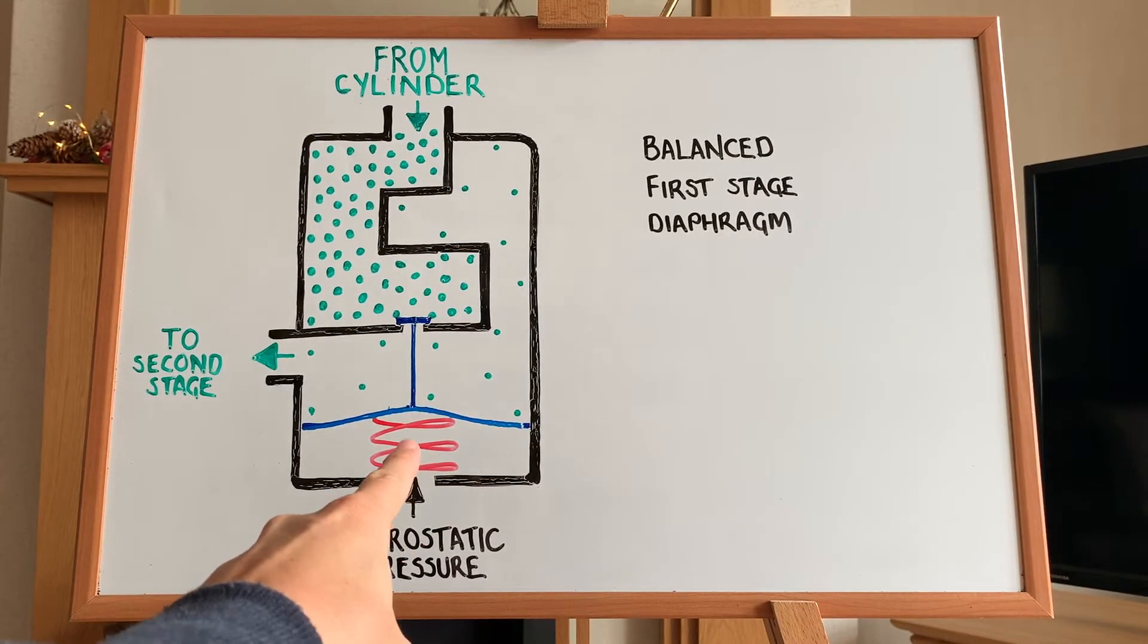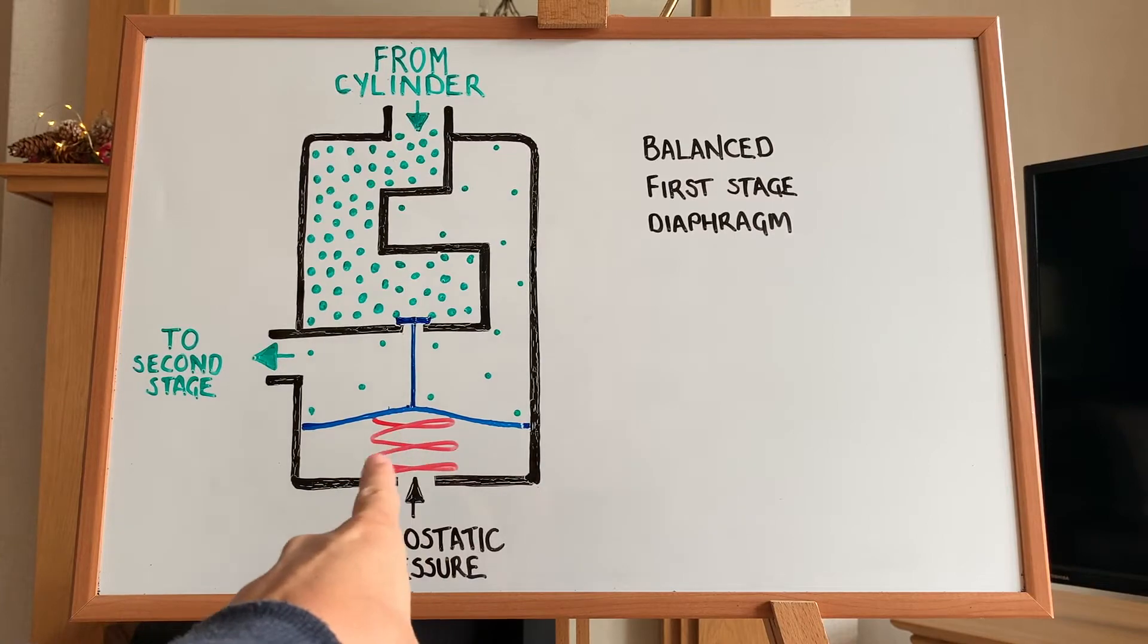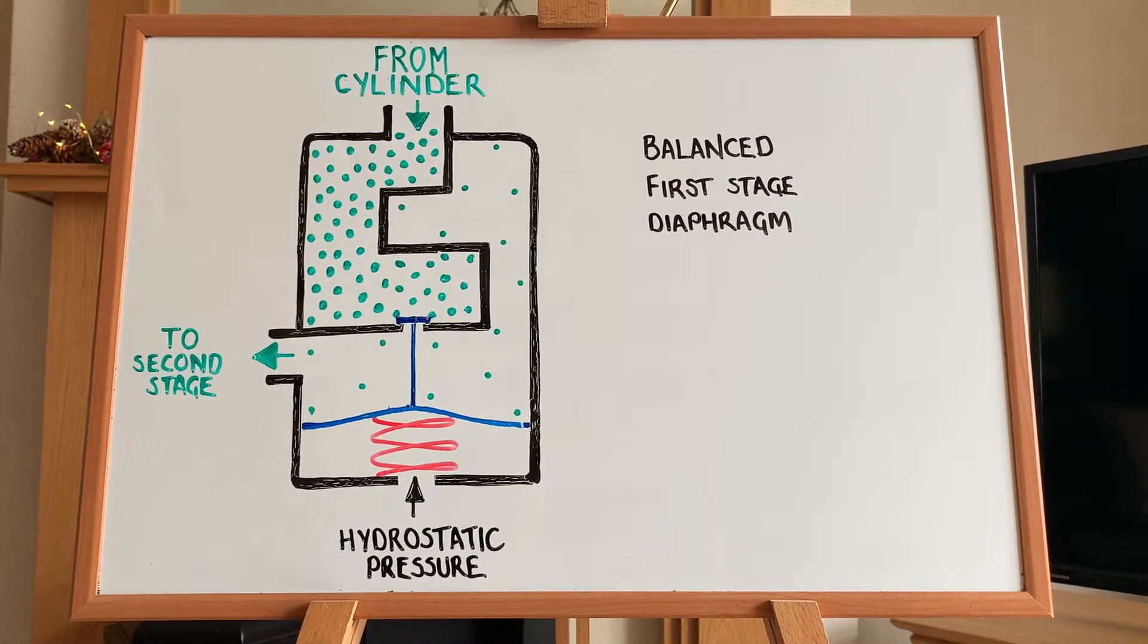We have the bias spring right here, which is the kind of the red swirly line. And this is a spring that helps aid the diaphragm to flex.